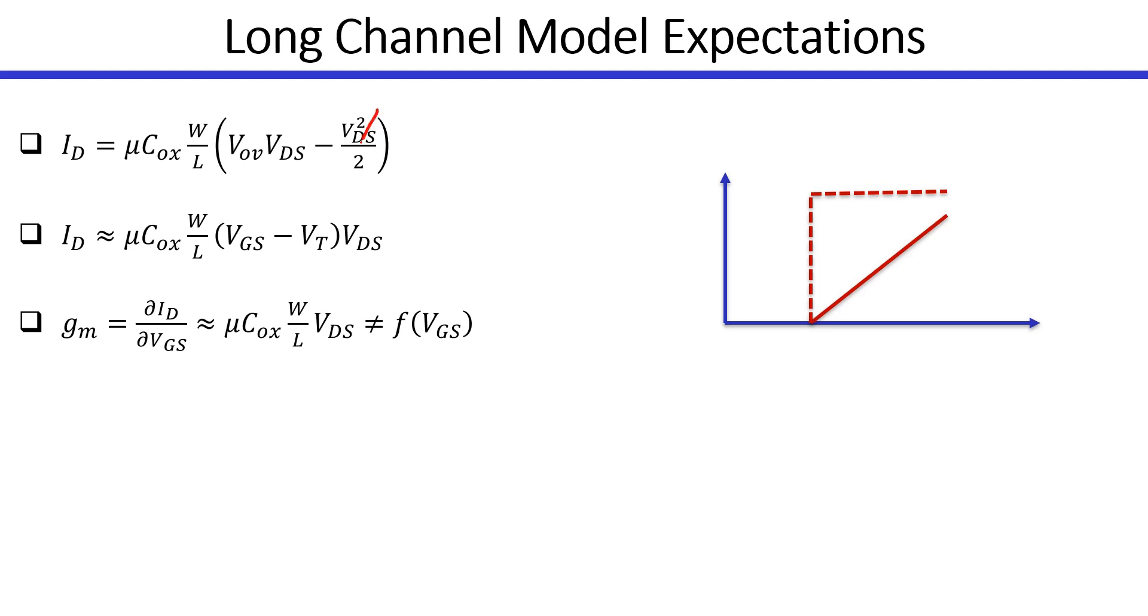Since VDS is very small, we can actually neglect this term in the equation. So the equation becomes linear. And as you know, V overdrive is simply VGS minus V threshold. So this is the equation of a straight line. If you plot VGS on the x-axis, Id would be a straight line like this where the x-intercept is the threshold voltage.